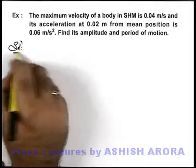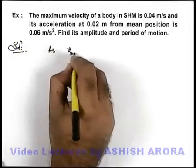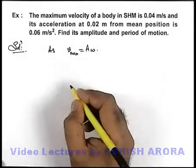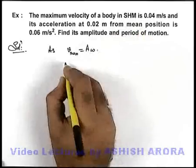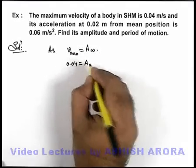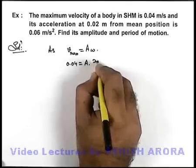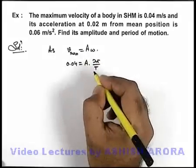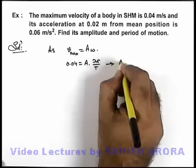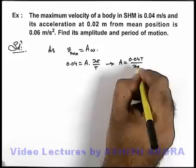Now in this situation, we can directly use that maximum speed of a particle in SHM can be written as A omega. If we substitute the maximum speed which is given as 0.04, is equal to A omega. Omega can be written as 2π by time period of oscillation. So from this situation we are getting the amplitude to be equal to 0.04 T upon 2π.